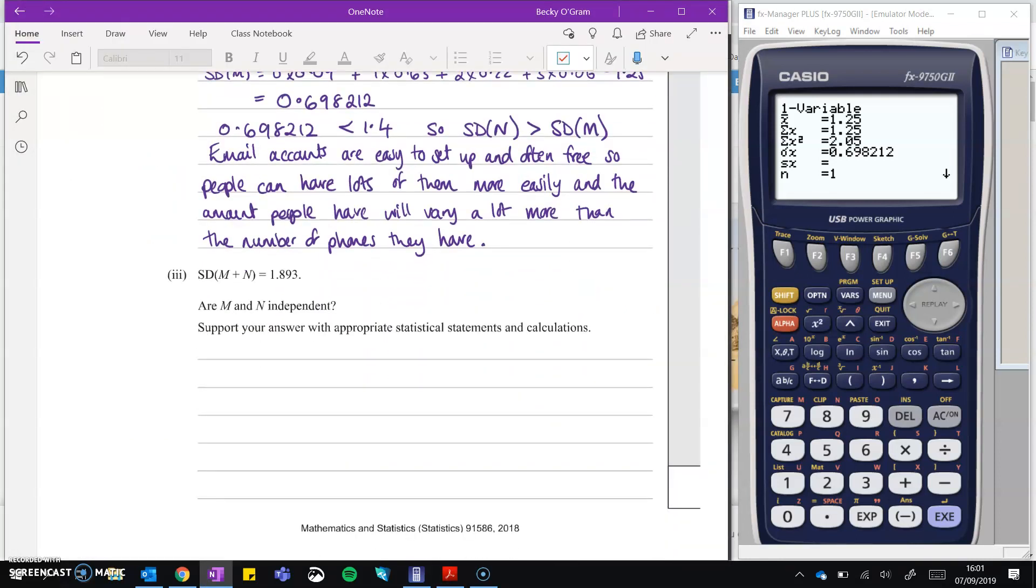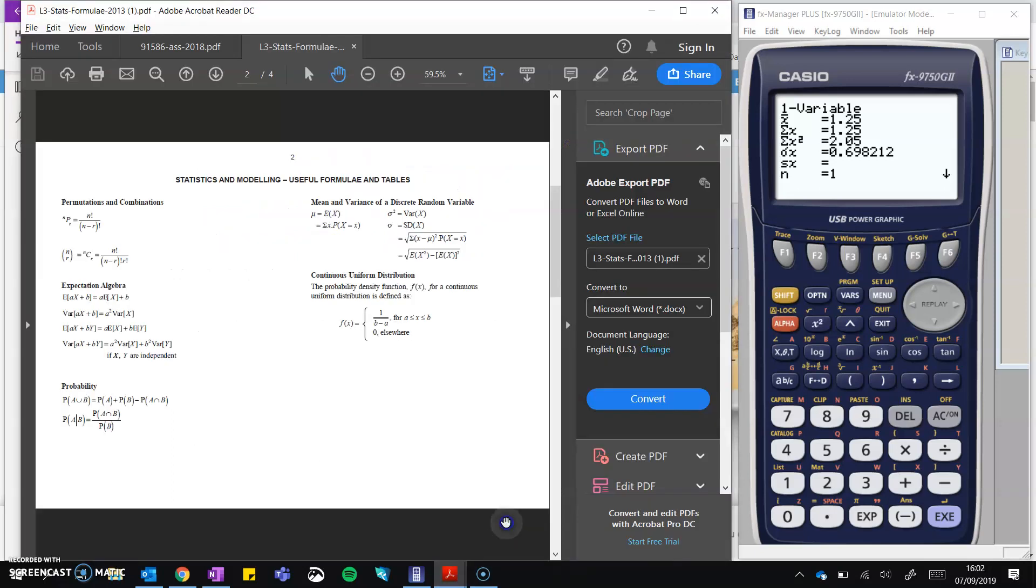Okay, let's take a look at part three. And this is asking us to take a look at whether M and N are independent. Support your answer with appropriate statistical statements and calculations. I'm going to draw your attention to the formula sheet for this one. So that's just here. We have on here this little section on the formula sheet that talks about how the expectation and variance of variables are related to each other. You've got this little bit here. If X and Y are independent, then this set of things hold to be true. I'm going to look at the variance bit here. Because that's what we've been given information about. Which is standard deviation is the square root of variance. Now, if they are independent, then the variance of two things added together will be the same as if we did the variance of one added to the variance of the other. We can ignore the A and the B. They're just constants, which we don't have in this question.